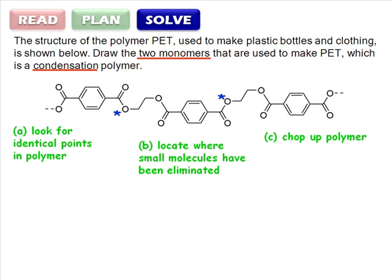Now that we have the repeat unit, we need to locate the condensation point. There are ester linkages at the beginning, end, and middle of the repeat unit. You should recall that esters are formed by reaction between carboxylic acids and alcohols. The byproduct of this reaction is water. So these are our condensation points.